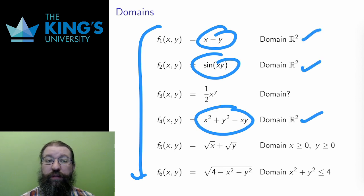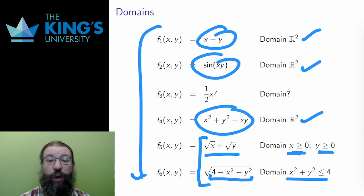The square roots in the fifth and the sixth give restrictions. In the fifth, since there are two individual square roots, both x and y have to be positive, so the domain must be the first quadrant in R². For the sixth, the entire expression in the square root needs to be positive, so x² + y² needs to be less than 4, and that gives a circle in R². So the domain here is a solid filled-in circle. A key idea here is that the domain is a region in R², not an interval in the number line.